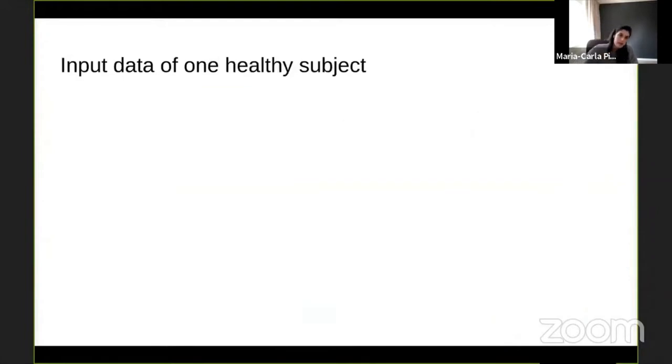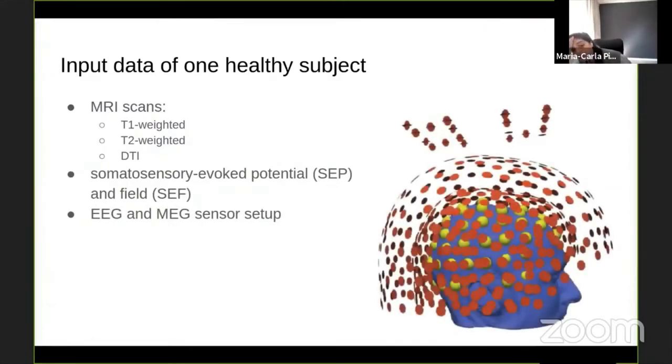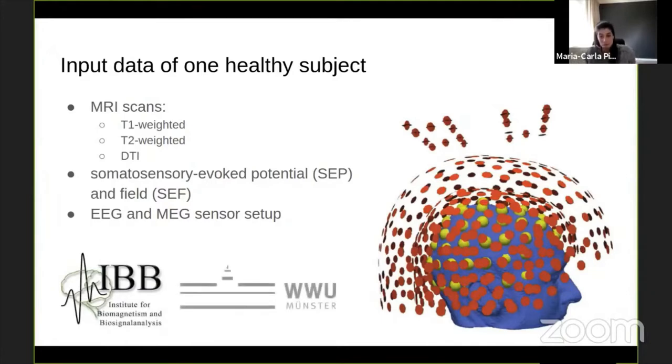Given the MRI scans, we are able to build our head models and source models. From the sensors, merging information from the sensor and the head and source model, we can simulate EEG and MEG signal. Having real data, we can estimate the noise for the EEG and MEG system. Once we have the signal and the noise, we can construct our SNR map and then visualize results in different ways for cortical and subcortical sources. As input data, we used anatomical and functional data of one healthy subject. As structural MRI scans, we had a T1-weighted, T2-weighted MRI and DTI. We recorded somatosensory evoked potential fields. This is a figure representing the EEG and MEG sensor setup.